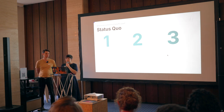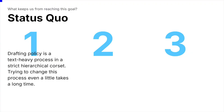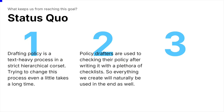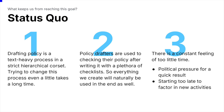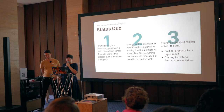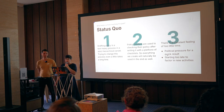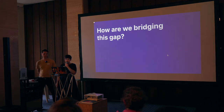There are things that keep us from reaching this goal. First, drafting policy is, as the status quo, a very text-heavy process in a strict hierarchical corset, and trying to change this process even a little bit takes quite some time. Second, policy drafters are used to checking their policy after writing it with a plethora of checklists, so everything we create will naturally be used at the end and not in the beginning, as it maybe should be. Third, there's a constant feeling of too little time — that might be because of political pressure for a quick result or starting too late to factor in new activities.